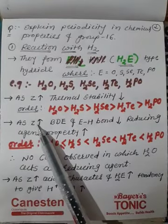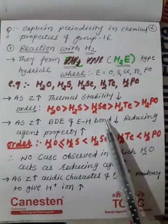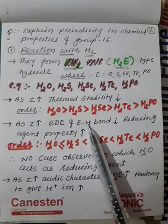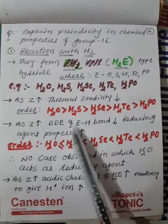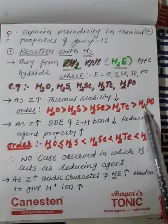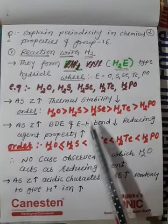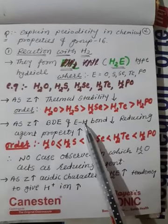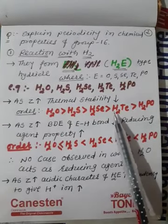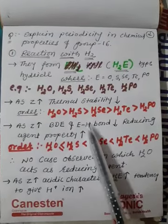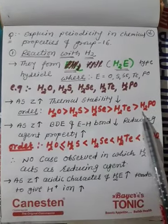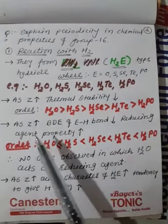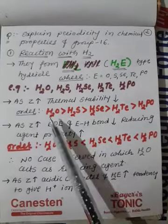As atomic number increases, bond dissociation enthalpy decreases down the group. Bond dissociation enthalpy means the energy required to break the H bond. If hydrogen is easily released, it can easily be supplied elsewhere — where it is supplied, reduction occurs and oxidation occurs. So down the group, bond dissociation enthalpy decreases and hydrogen is easily available, meaning reducing agent property increases.